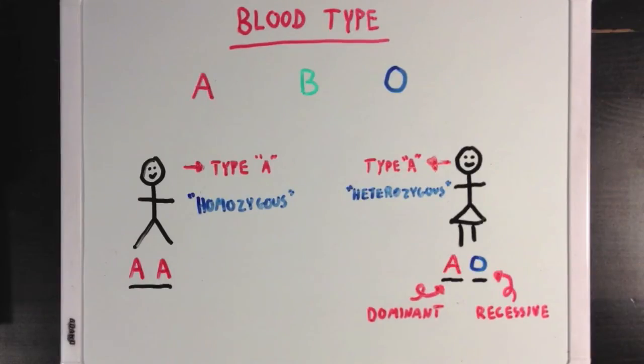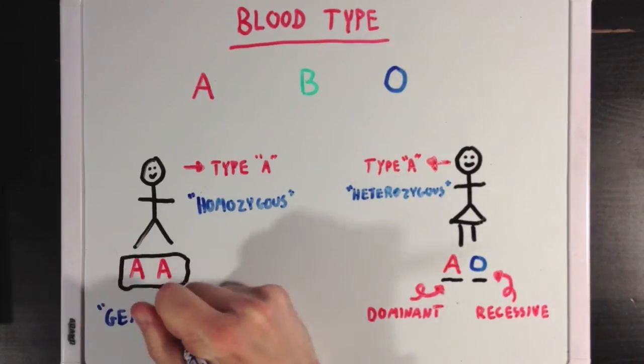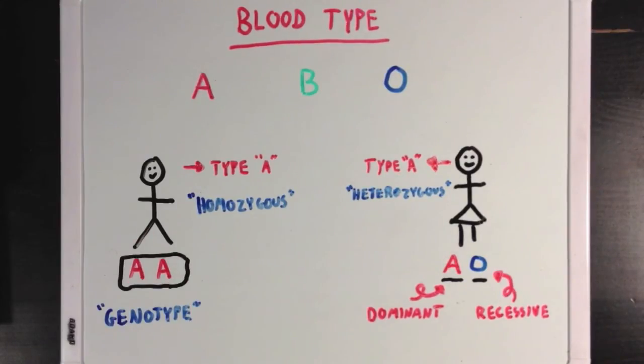Now I want to introduce two more terms. We can describe a person's genes in two different ways. We can look at the person's individual alleles, and we call this the genotype. So for this guy, his genotype is AA, referring to his two alleles which both code for blood type A.